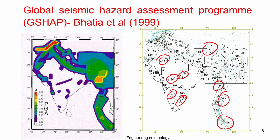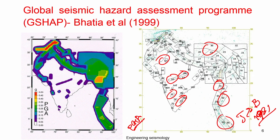Using the Joyner and Boone equation of 1981, they estimated the PGA. As we know, the ground motion prediction equation is a function of ground motion parameters, so this is a function of PGA. They estimated the PGA using probabilistic seismic hazard analysis and generated a map showing places where the G value is 0.3 and above, and also places where the G value is less than 0.05.